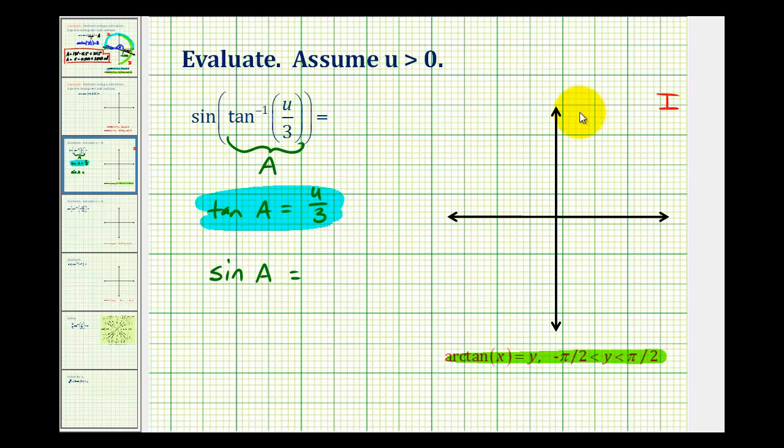So now we'll draw a reference triangle in quadrant one to model angle A that has a tangent function value of u over three. So if this is our reference triangle and this is our angle A, the opposite side would be u and the adjacent side would be three.